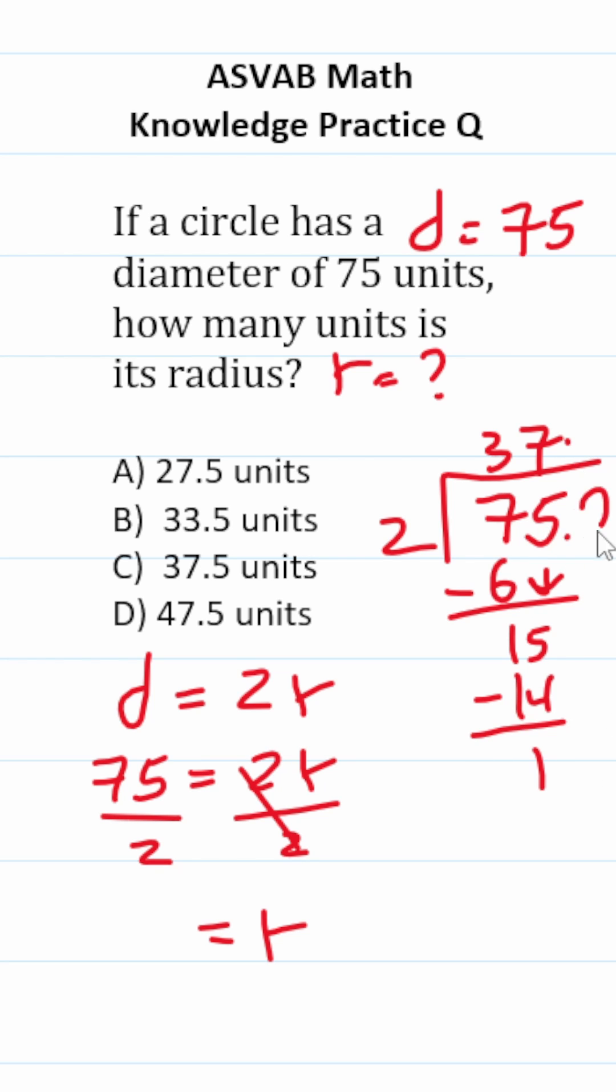Add a decimal there. Add a decimal there. Add a 0 placeholder. Drop it down. 2 times 5 is 10. So the radius is 37.5.